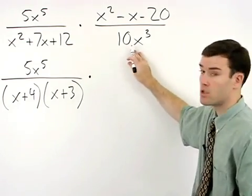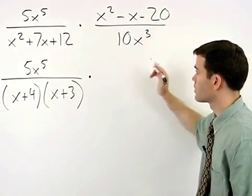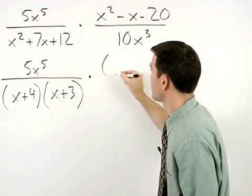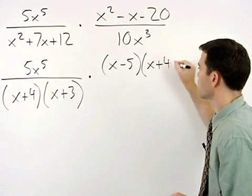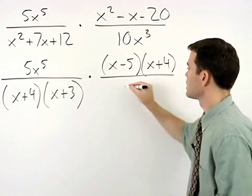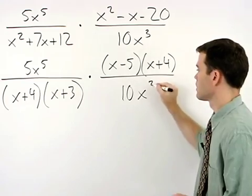In the second expression, notice that the numerator factors and we have x minus 5 times x plus 4 over 10x to the third.